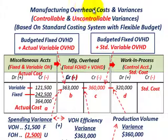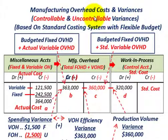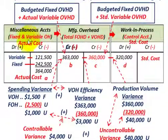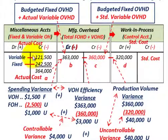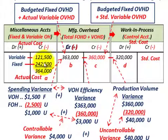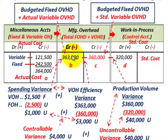What we're going to be going over here is manufacturing overhead costs and variances. We're going to be looking at the controllable versus uncontrollable variances, calculating these based on a standard costing system using a flexible budget. We're going to be tracking our fixed and variable overhead costs through T-accounts here with the associated formulas, starting with our actual costs for fixed and variable overheads, moved into a manufacturing overhead control account.